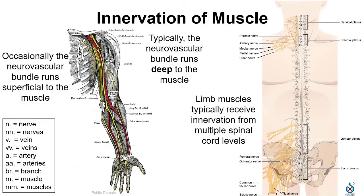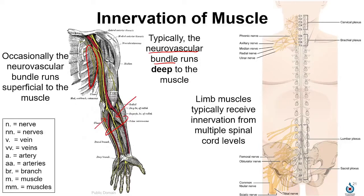As we approach regional anatomy, we'll talk about the nerves innervating each muscle. They typically run deep to the muscle in a bundle with vasculature — we call that a neurovascular bundle. Muscles here in this image have been reflected so that you can see the neurovascular bundles running through the forearm. One striking exception is the serratus anterior muscle, where the nerve running on it is superficial to that muscle.